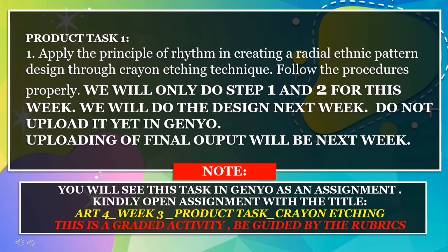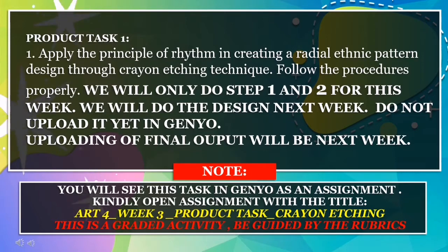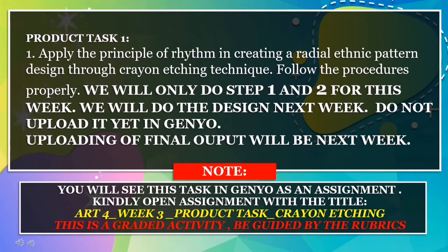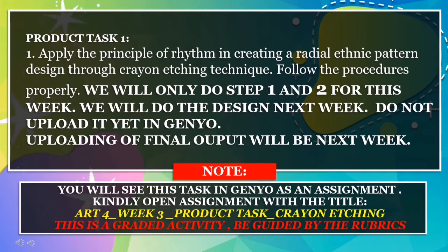For our product task, apply the principle of rhythm in creating a radial ethnic pattern design through crayon etching technique. Follow the procedures properly. We will only do step one and two for this week. We will do the design next week. Please do not upload it yet in Genio. The uploading of final output will be next week. You will see this task in Genio as an assignment. Kindly open the assignment with the title Art 4, Week 3 Product Task, Crayon Etching. Please take note that this is a graded activity. Please be guided by the rubrics.